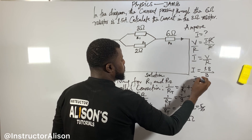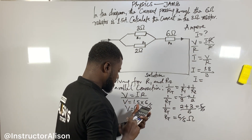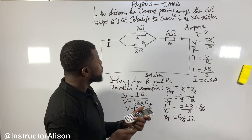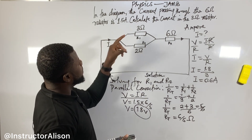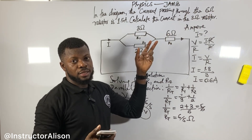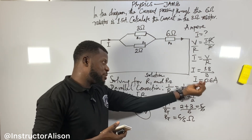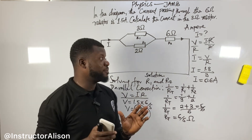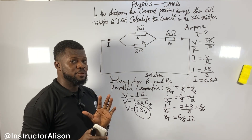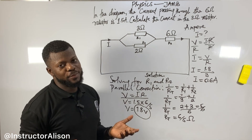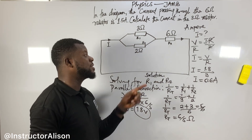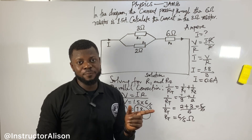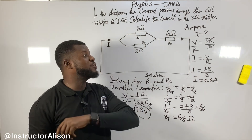I equals 1.8 divided by three, which gives 0.6 amperes. This makes sense — if 1.5 amperes passes through the six ohm resistor, the current through the three ohm resistor should be smaller. The answer is 0.6 amperes. If you got this, let me know in the comment section. Like, share, and don't forget to hit the subscribe button.